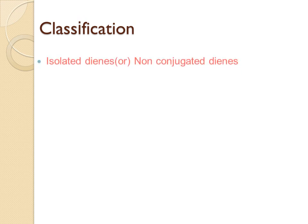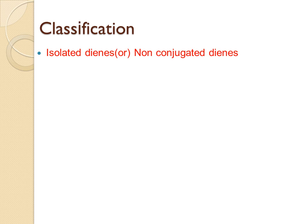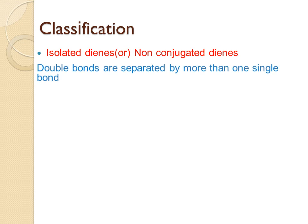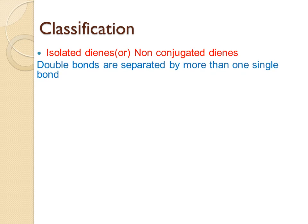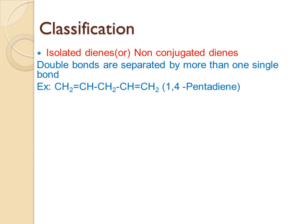How do we classify dienes? Dienes are classified based on the position of the double bond. They are classified into isolated dienes, conjugated dienes, and cumulated dienes. If the double bonds are separated by more than one single bond, they are called isolated dienes. For example, 1,4-pentadiene has a double bond at carbon 1 and carbon 4 with two single bonds in between, so it is called an isolated or non-conjugated diene.